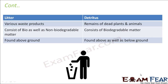So litter and detritus. Litter refers to the various waste products that come out of different uses — like papers, plastics, anything that comes out of your home. They all form together litter. Whereas detritus refers to the remains of dead plants and animals. Anything other than detritus can be categorized as litter.